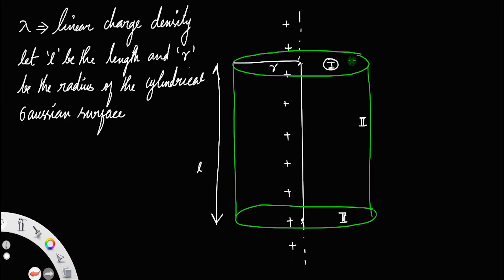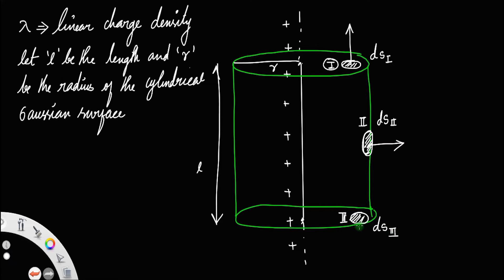If you take small area elements on all these surfaces — let us call the top face area ds1, whose direction is perpendicular to the surface; the curved surface area ds2, also perpendicular to the surface; and the bottom face area ds3, also perpendicular. Remember, the direction of the area vector is always perpendicular to the surface, but we have the electric field only in the horizontal direction.